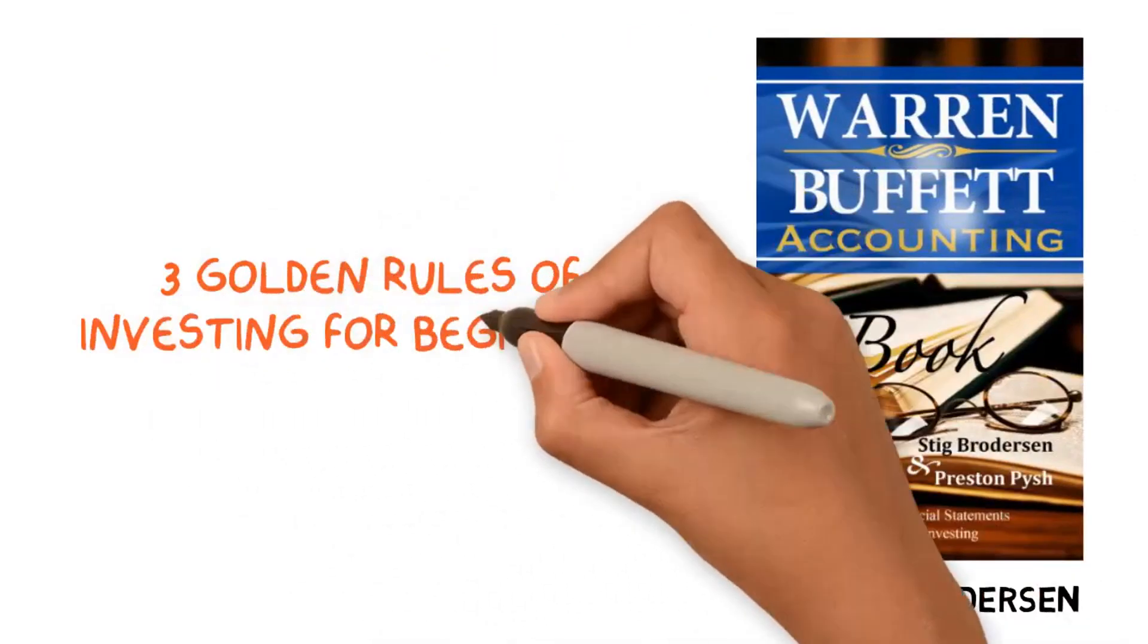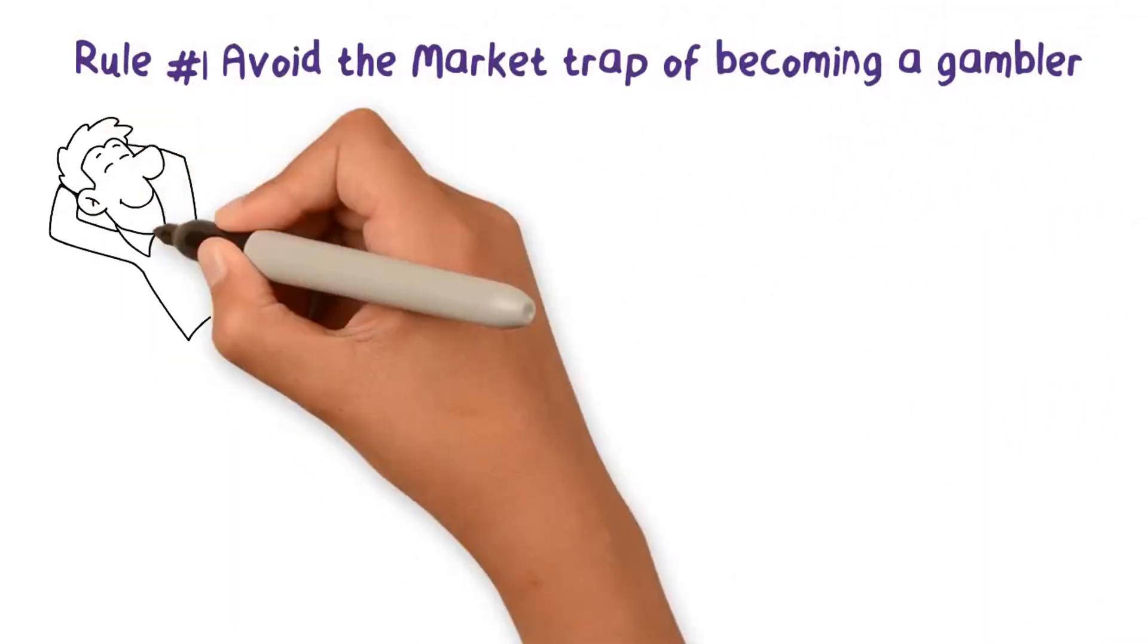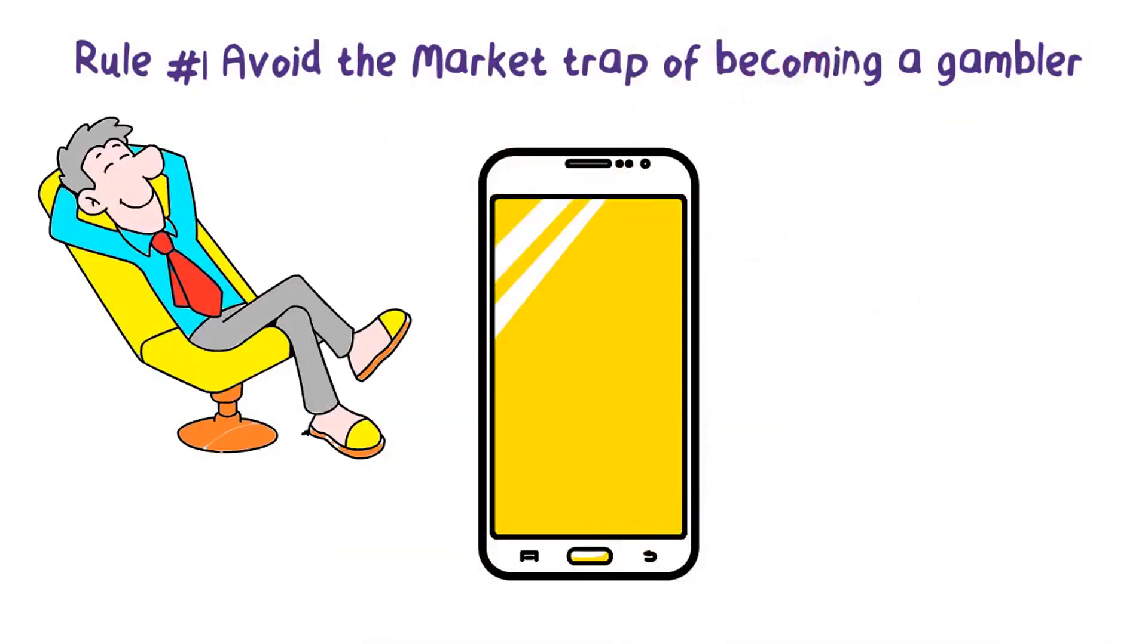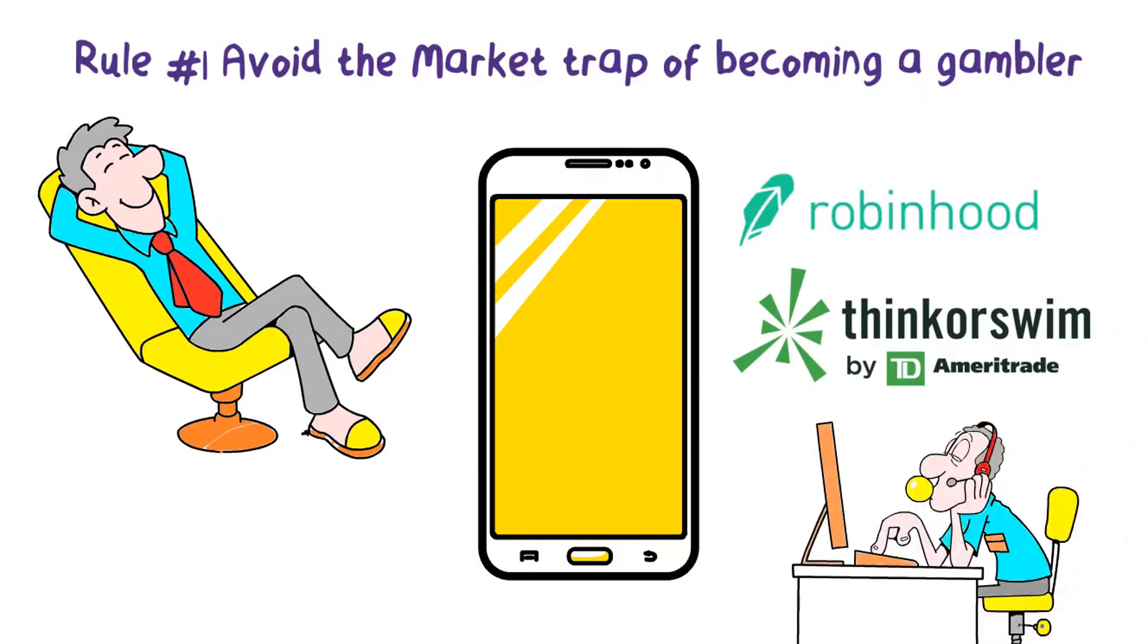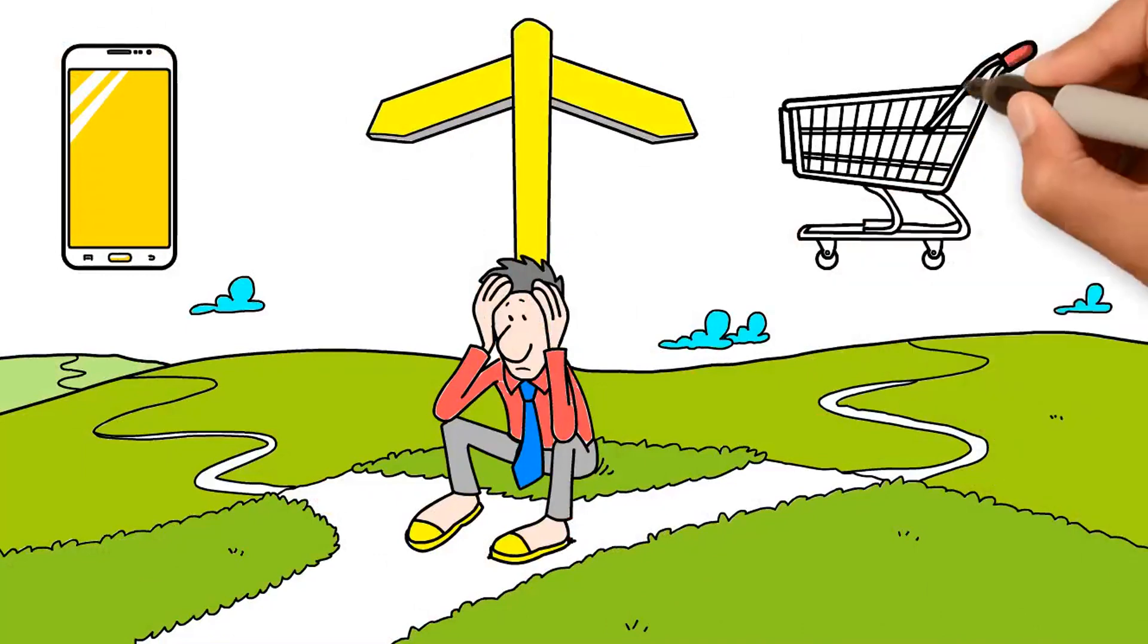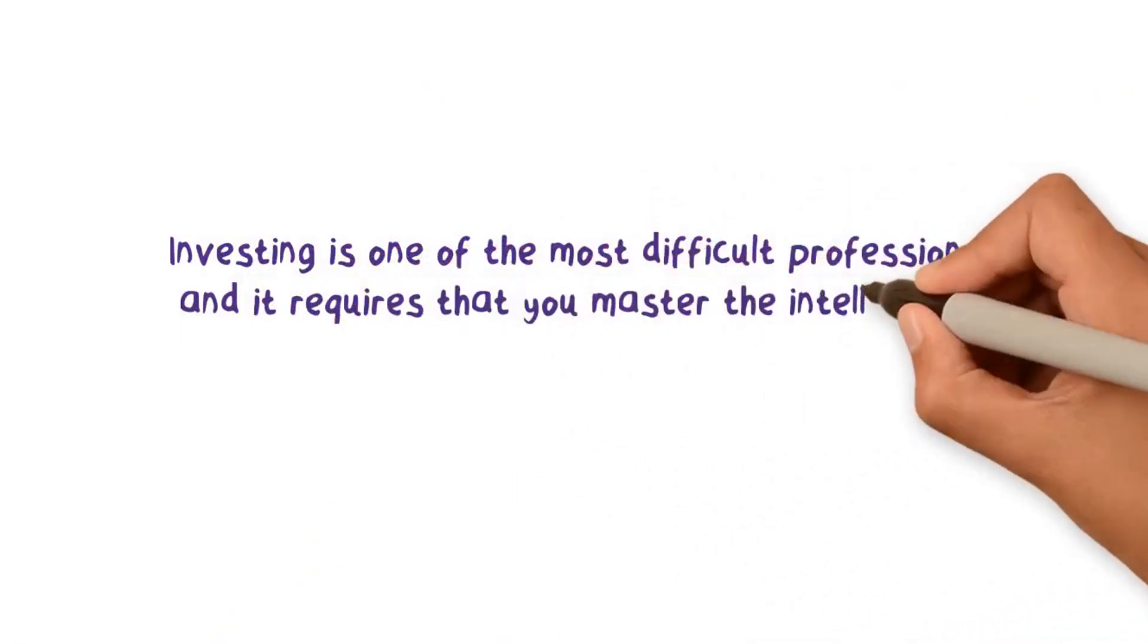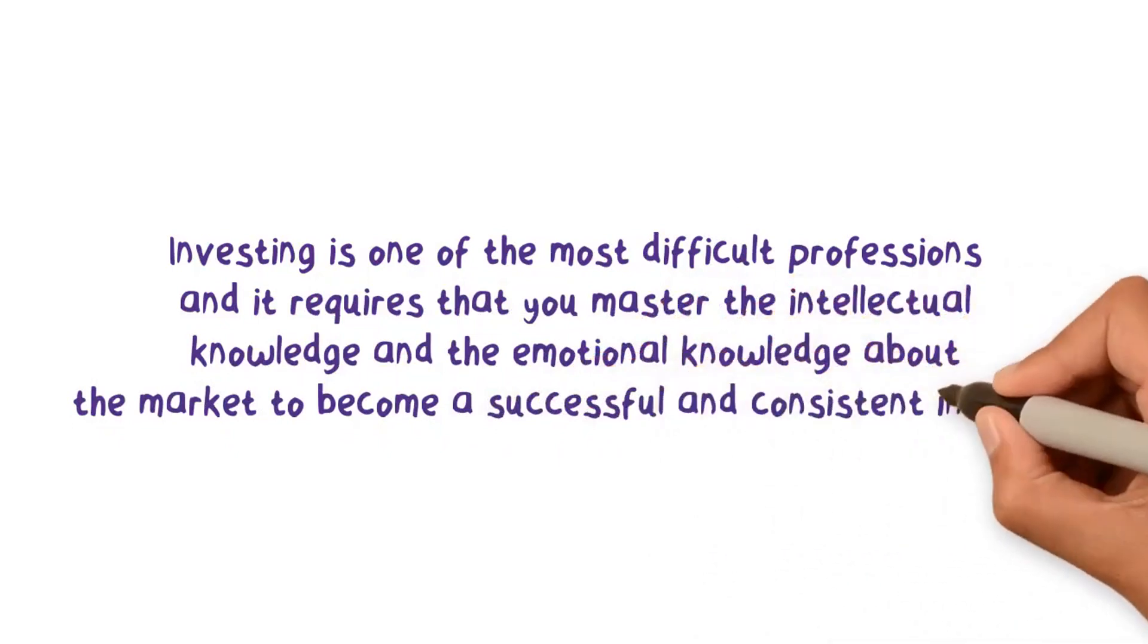Finally, here are the three golden rules of investing for beginners. Rule number one: avoid the market trap of becoming a gambler. Nowadays, it's easier to start investing in the stock market than any time before. Now with your cell phone, you can open a brokerage account and download an app such as Robinhood or Think or Swim from TD Ameritrade and deposit money from your bank account and start investing within minutes. So many people get a false belief that they have the knowledge required to be a successful investor just because they know how to open a brokerage account. Investing is one of the most difficult professions and it requires that you master the intellectual knowledge and the emotional knowledge about the market to become a successful and consistent investor.